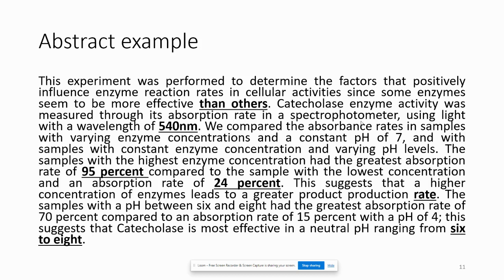For example, from a biological experiment abstract: 'the experiment was performed to determine the factors that positively influence enzyme reaction rates.' The methodology states 'the enzyme activity was measured through its absorption rate in a spectrometer using light with a wavelength of 540 nanometers.' Results report specific values such as 'a rate of 95% compared to a sample with the lowest concentration and an absorption rate of 24%.' The conclusion states 'the enzyme is most effective in a neutral pH ranging from 6 to 8.'